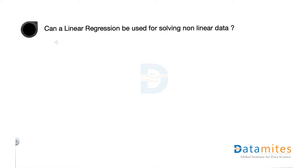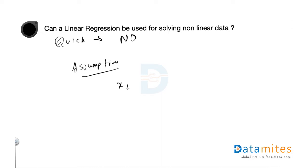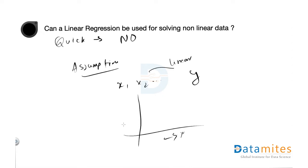The quick answer is no, because one of the assumptions of linear regression is that your predictors — x1, x2 — should have a linear relationship with your target. If the data does not have a linear relationship, then linear regression will not give you good results. That's the quick answer.